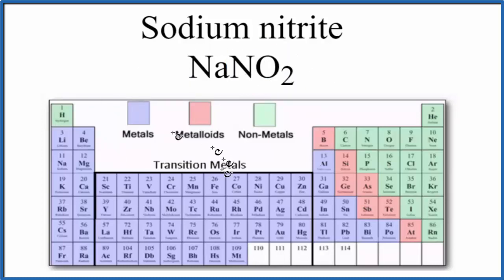So if we look at the periodic table, we have sodium right here, and that is a metal. Nitrogen and oxygen, those are both nonmetals. So we have a metal and then nonmetals. That's going to be an ionic compound almost all of the time.